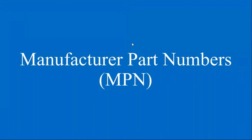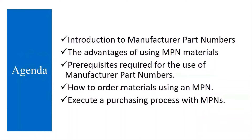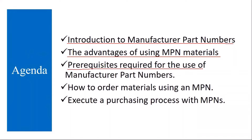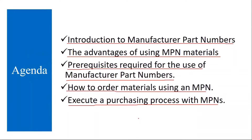We'll be starting our next topic: Manufacturer Part Numbers, or MPN. The topics we are going to cover include an introduction to manufacturer part numbers, why they are used, the advantages of using MPN materials, why we need to use them, prerequisites required, what settings we need to do in the system, how to create a purchase order using MPN material numbers, and how the purchasing process is executed with MPNs.